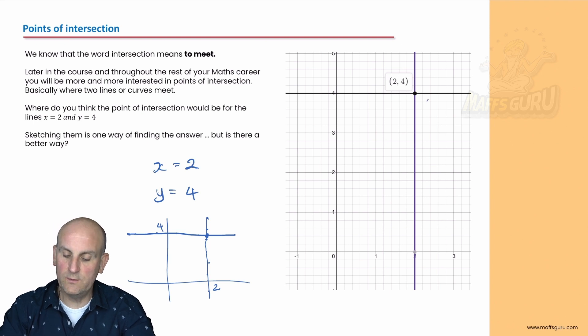Well if it meets there, what do we notice? The x value is 2 and the y value is 4. So I didn't need to draw the graph because you'd already told me in code that they're going to meet where the x value is 2 and the y value is 4.